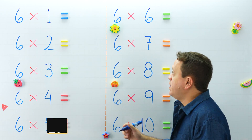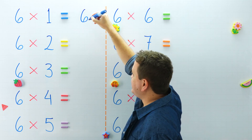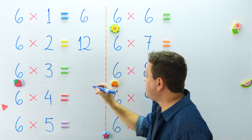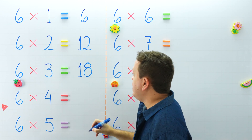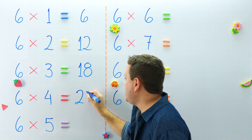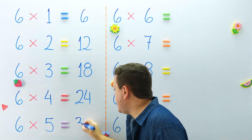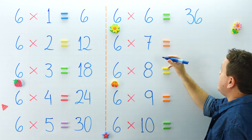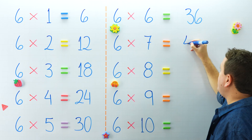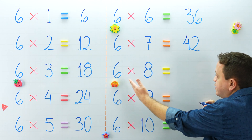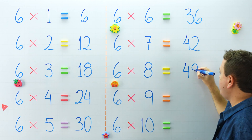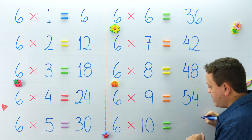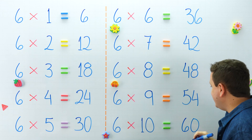Let's continue with the 6 times table. 6 times 1 equals 6, and 6 times 2 equals 12. 6 times 3 equals 18. That's right. And 6 times 4 equals 24. One more, 6 times 5 equals 30. That's it. On the other side, 6 times 6 equals 36. And 6 times 7 equals 42 — never forget that. 6 times 8 equals 48. And 6 times 9 equals 54. One more please, 6 times 10 equals 60. That's right.